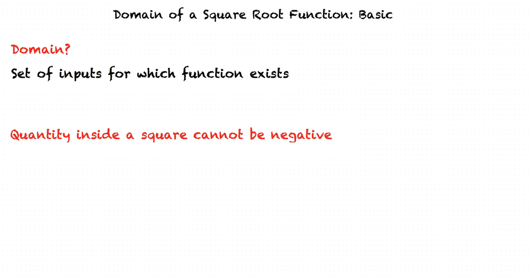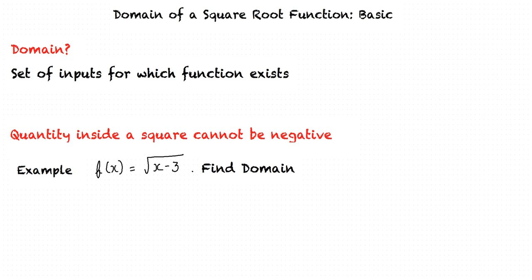Let me explain this with an example. Consider we have a function f(x) equals square root of (x minus 3), and we are required to determine the domain of the function. Since the quantity inside a square root cannot be negative, the quantity should be equal to zero or greater than zero. Hence we have x minus 3 greater than or equal to zero, which implies x is greater than or equal to 3.